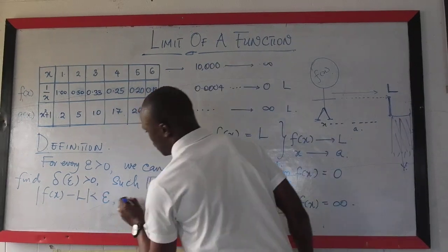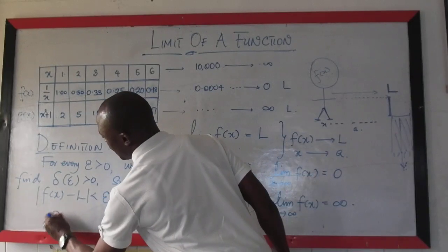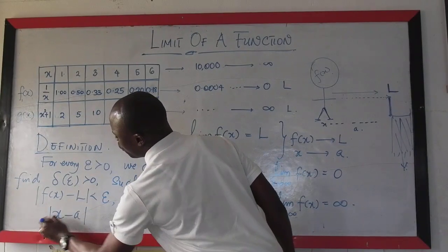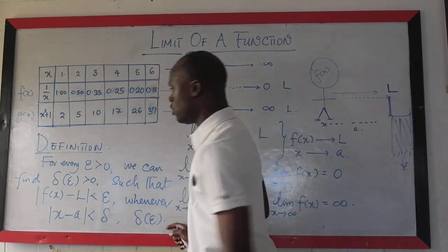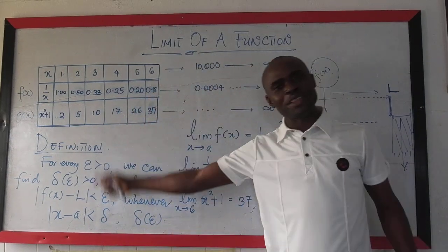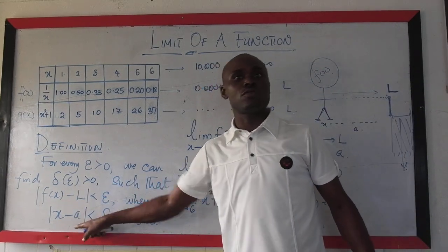whenever x gets arbitrarily close to delta. Remember that delta depends on epsilon. So, this is the mathematical definition telling you that this gets closer to this as this gets closer to this.